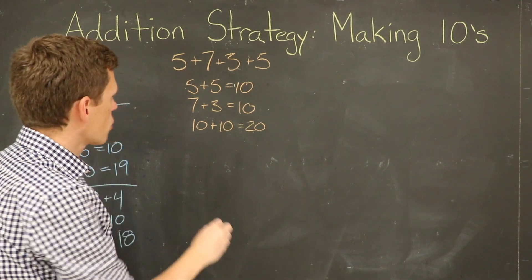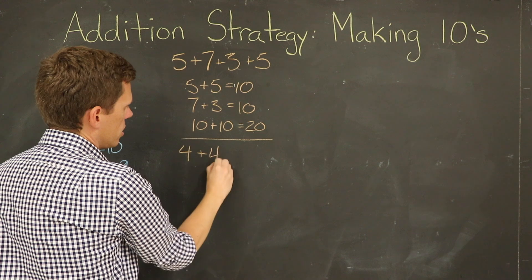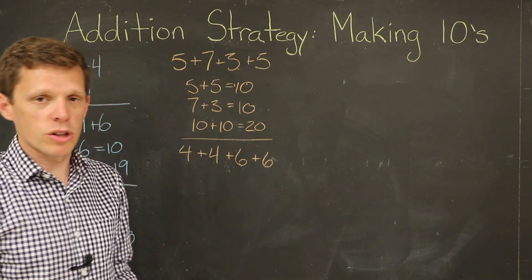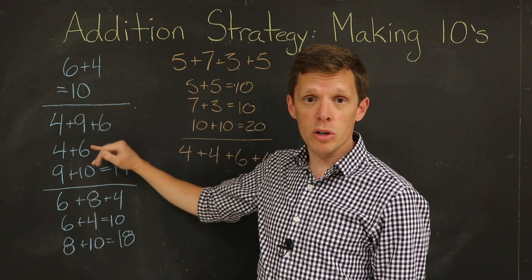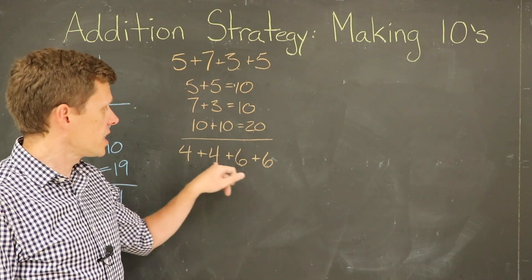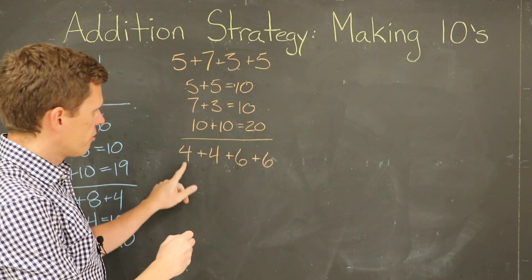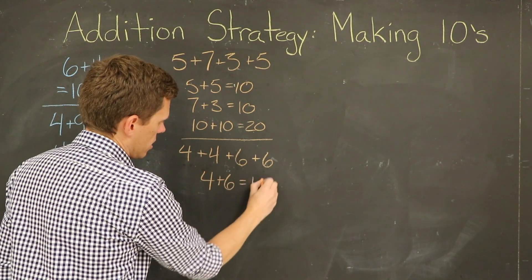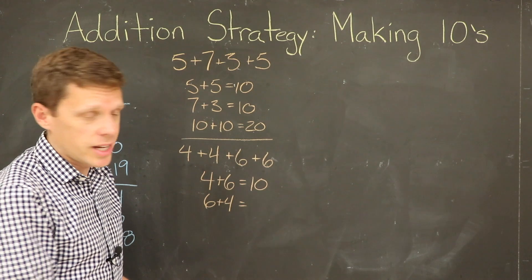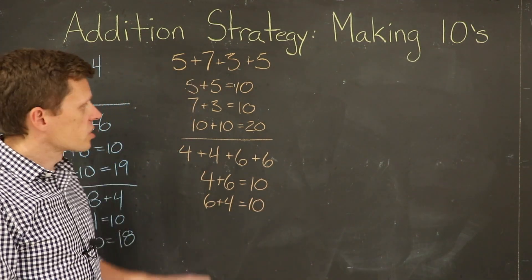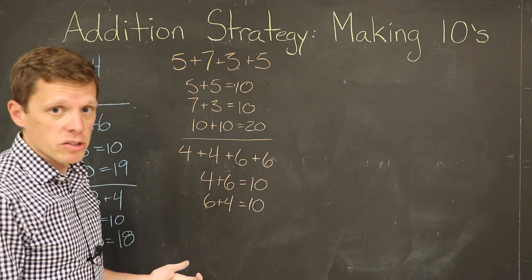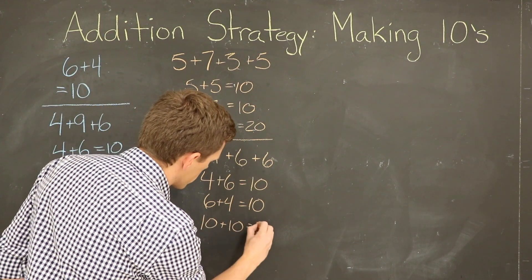Let's try another one: four plus four plus six plus six. This builds on our previous work with six and four. Hopefully you see immediately that you can put the fours and the sixes together to make two groups of ten. So four plus six equals ten, and six plus four also equals ten. Then just as in the previous example, we add our two tens together: ten plus ten equals twenty.